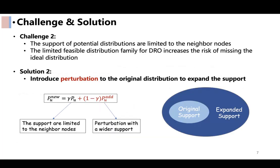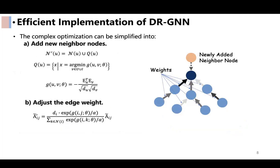Second, within DRO frameworks, all potential distributions share the same support as the original one, which means the support of all distributions in the search space is confined to the neighboring nodes. The limited feasible distribution family for DRO will increase the risk of missing the ideal distribution. To address this, we introduce perturbation to the neighbor distribution to expand the support. We refer to our designed algorithm as DRGNN, which can be simply implemented by adjusting the graph's adjacency matrix, sparing the complex optimization.